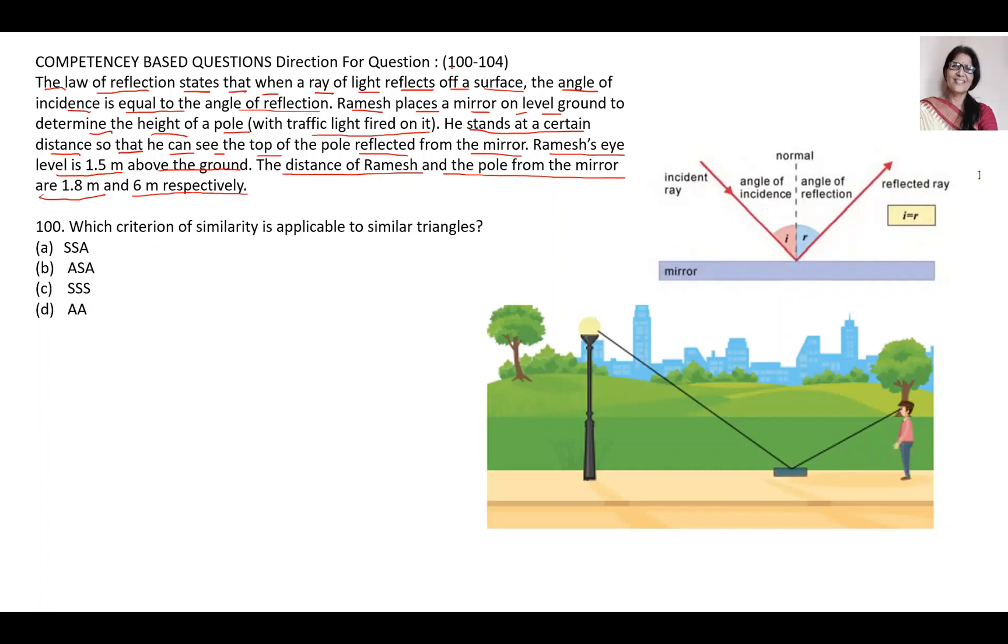There will be 5 questions. First question: What criterion of similarity is applicable to similar triangles? This is SSA, ASA, SSS, or AA.